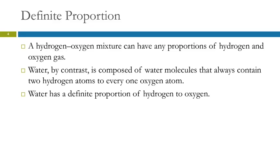So we've talked about the law of definite proportions. Water has a definite proportion. It's a compound. It has a definite proportion of hydrogen to oxygen. In a mixture of hydrogen and oxygen, you could have any proportion, a variable proportion.